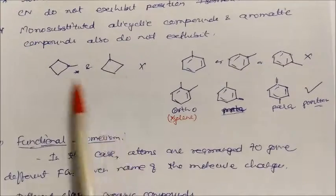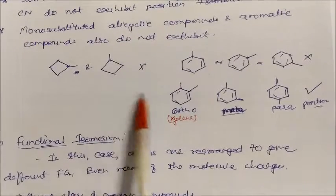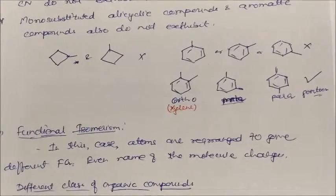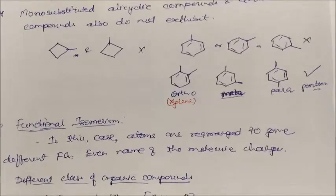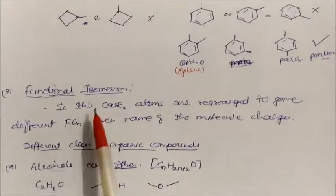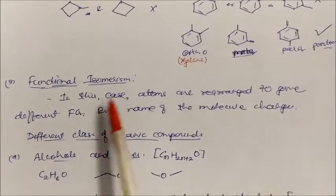For monosubstituted benzene rings, there are no position isomers — they are the same structure. Even ortho, meta, and para substituted compounds are not position isomers of each other in the monosubstituted case.